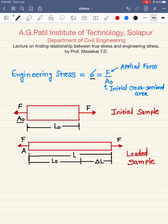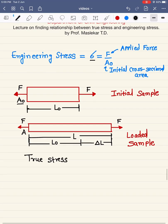True stress is denoted by the symbol sigma T, and is calculated by the formula F upon A, where F is the applied force and A is the current cross-sectional area.